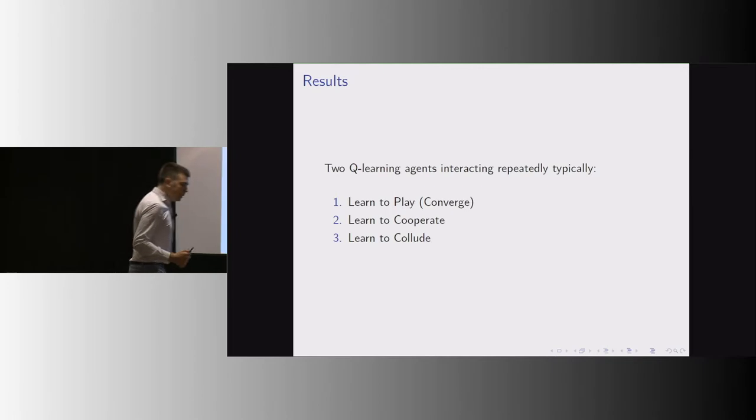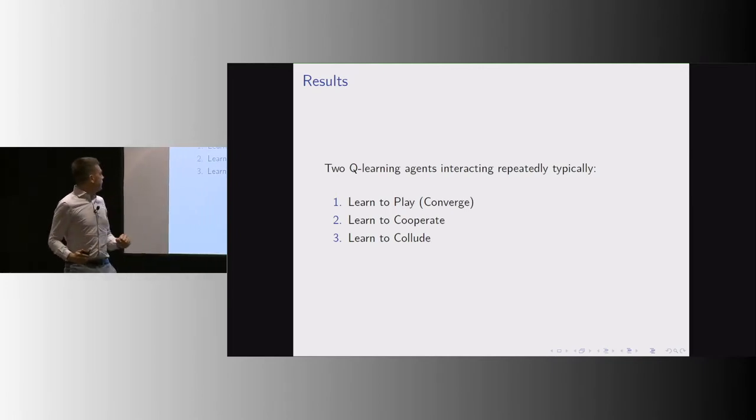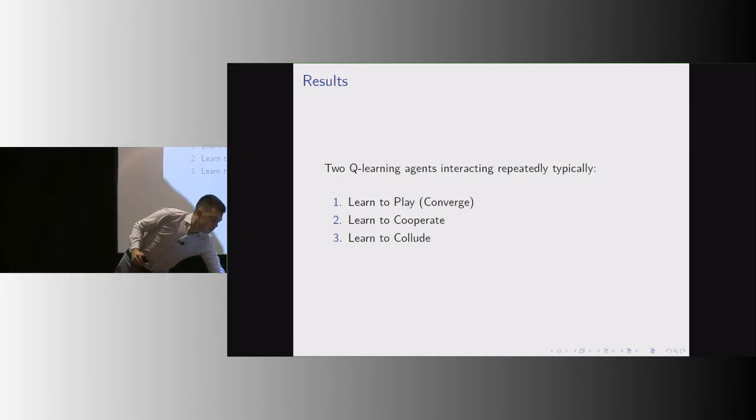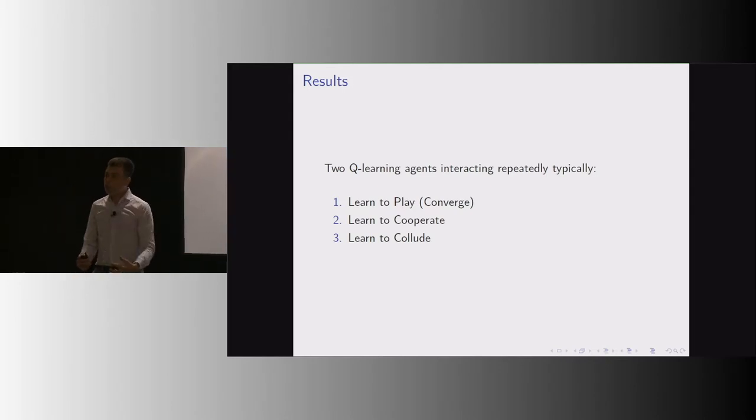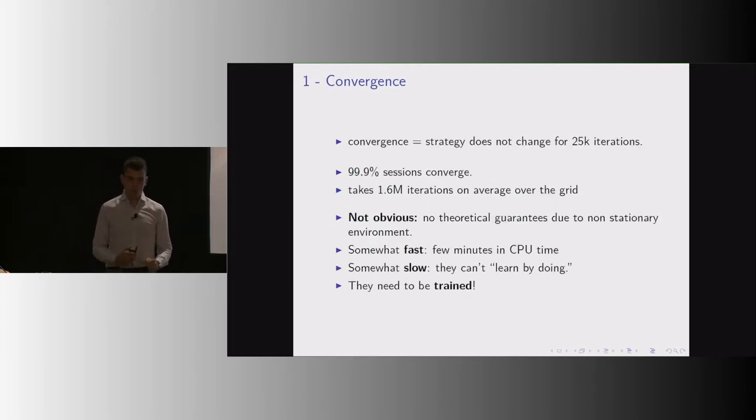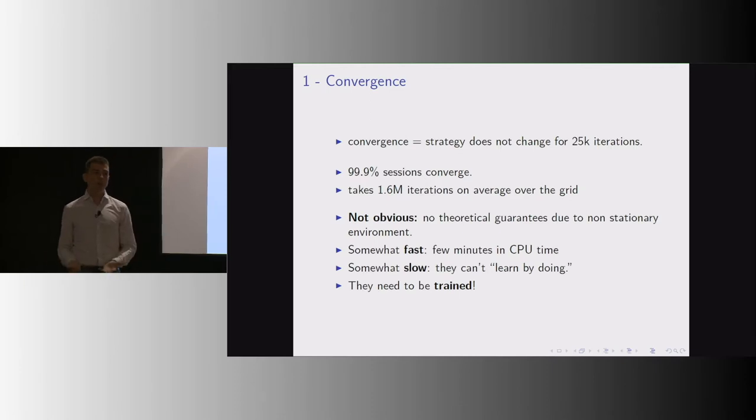The results here are that these two Q-learning agents typically learn to play. They learn to cooperate, and they actually learn to collude. By learning to play, I mean that this sequence of strategies eventually stops evolving, so they converge. This is not obvious at all. There is no theoretical guarantee that this would happen.